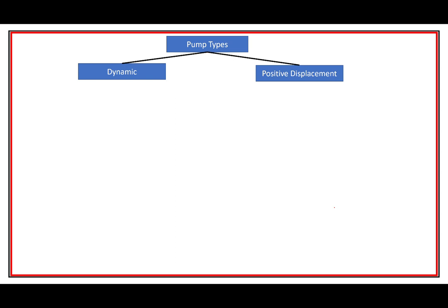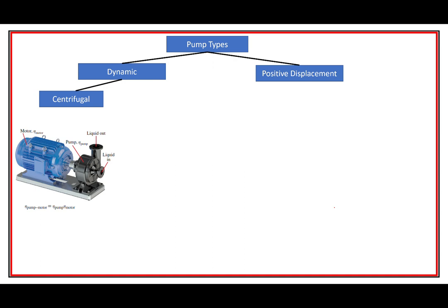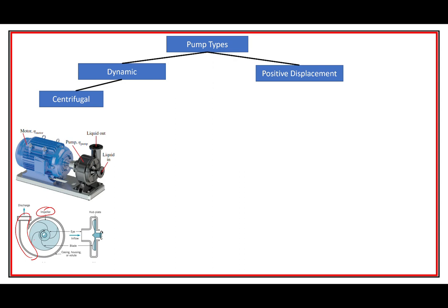I added this section on pump types just for your information. We have two broad categories of pumps: dynamic pumps and positive displacement pumps. Dynamic pumps are what we'll talk about in turbomachinery. Centrifugal pumps are probably the most common - they use an impeller to increase radial velocity, and then that flow gets captured in something called a volute where it gets slowed down and pressure is increased.